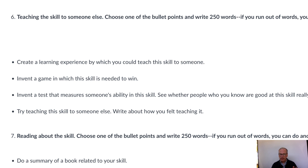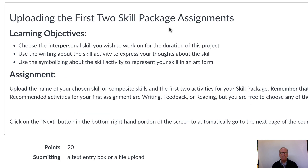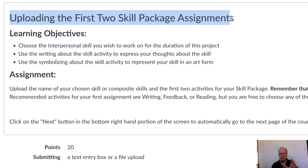Now, this is a lot of different activities, but they're not all going to be done at once. What's going to happen is you'll pick your skill and then for the first assignment you're just going to upload the first two skill package activities — the writing and the symbolizing — just those two at a time.